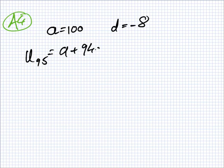Find the 95th term. Okay, so you have what's A here? Well, it's 100. And the D? Minus 8. So they want the 95th term. That would be A plus 94D, which would be 100 minus 652.